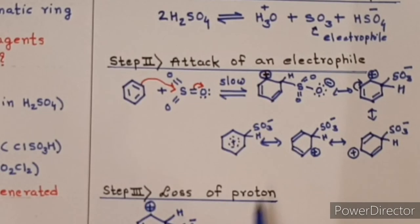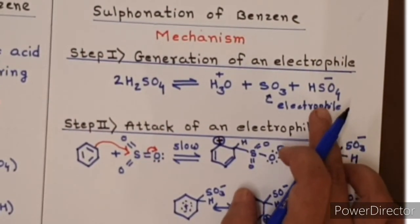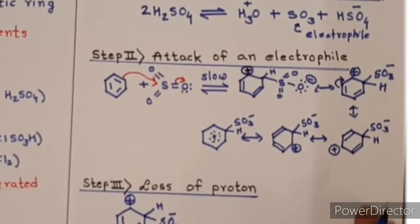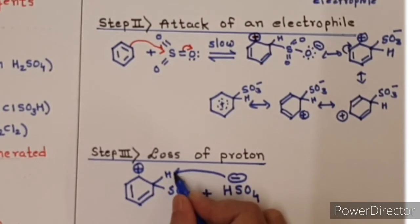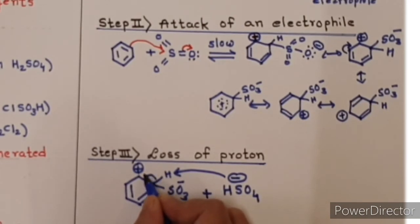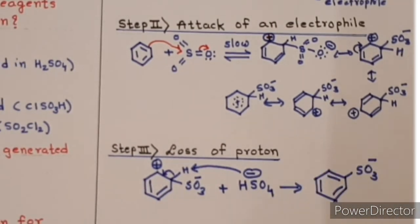In step three, loss of proton takes place. As you know, in the first step, there is HSO4- generated. This HSO4- will act as a base and will abstract one of the protons. The electron pair between hydrogen and benzene will move to benzene, and you will get this product. H2SO4 will be formed.